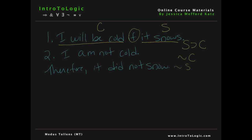So let's write that out. We have first premise: if S, then C — if it snows, then I will be cold. Second premise: it's not the case that I am cold, or more colloquially, I am not cold. Therefore, we can conclude it did not snow.